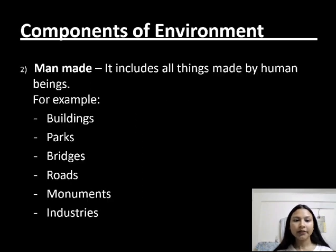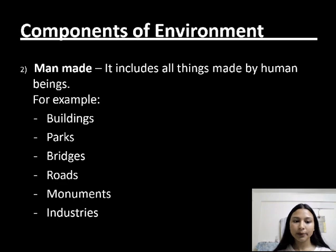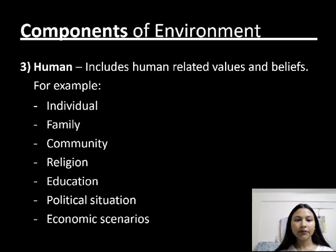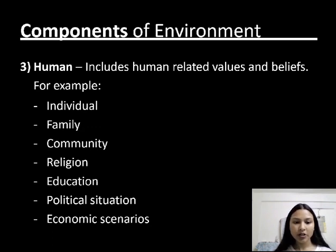After that, we have man-made. It includes all things made by human beings. For example, buildings, parks, bridges, roads, monuments, and industries. The third component is human. It includes human-related values and beliefs. For example, individual, family, committee, education, political situation, economic scenarios, and so on.